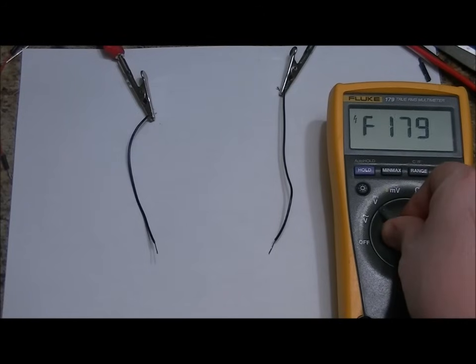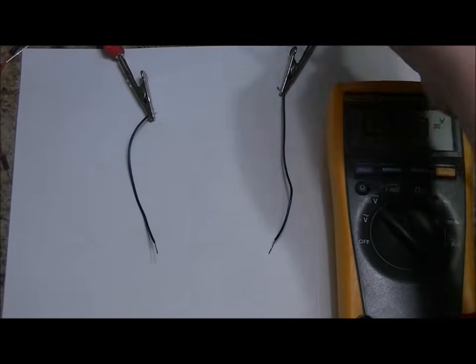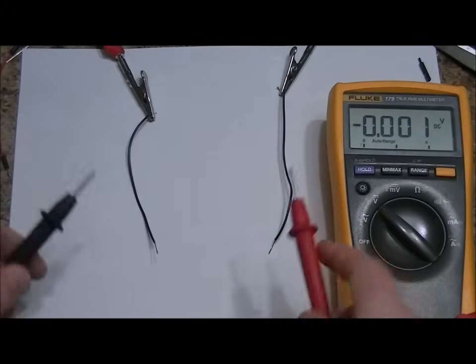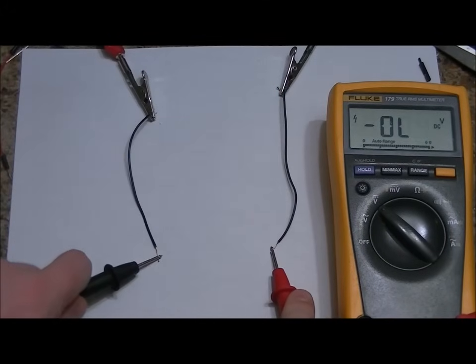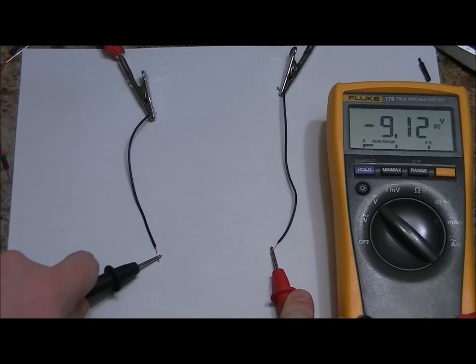You take your multimeter and set it to DC voltage. And then you take your two probes and you probe both lines. You'll notice that the multimeter says negative 9.12 volts. That means that I have my probes reversed.